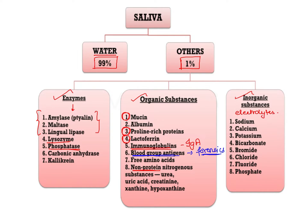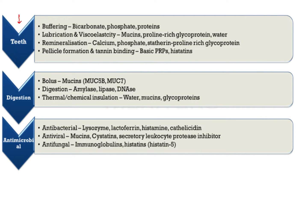The most important function of saliva on teeth is buffering action, elicited by bicarbonates, phosphate, and proteins — with the major contribution from bicarbonates. Lubrication and viscoelasticity are due to mucins and proline-rich glycoproteins. Remineralization is brought about by calcium, phosphate, statherin, and proline-rich glycoproteins. Pellicle formation is by basic proline-rich proteins and histatins.